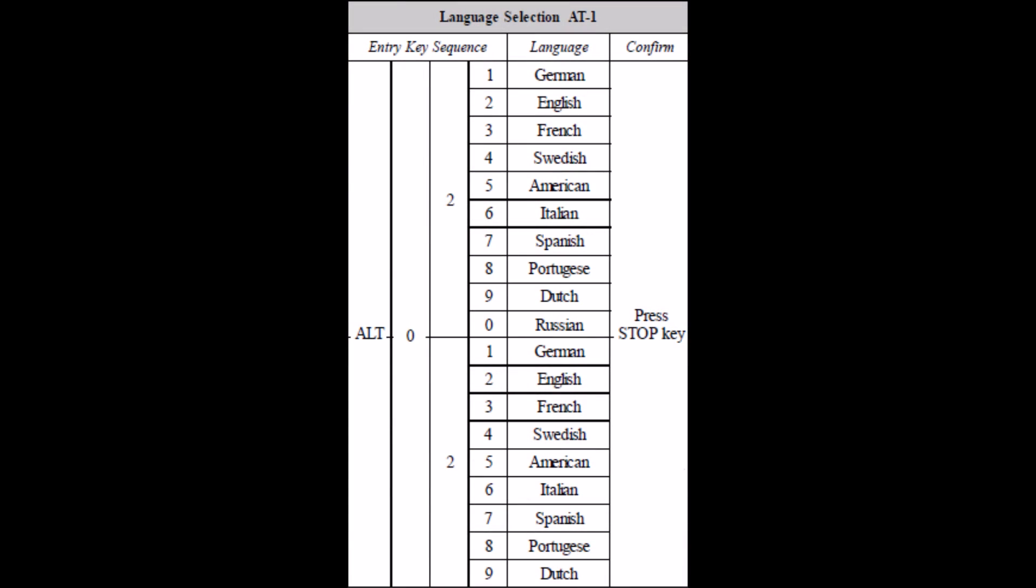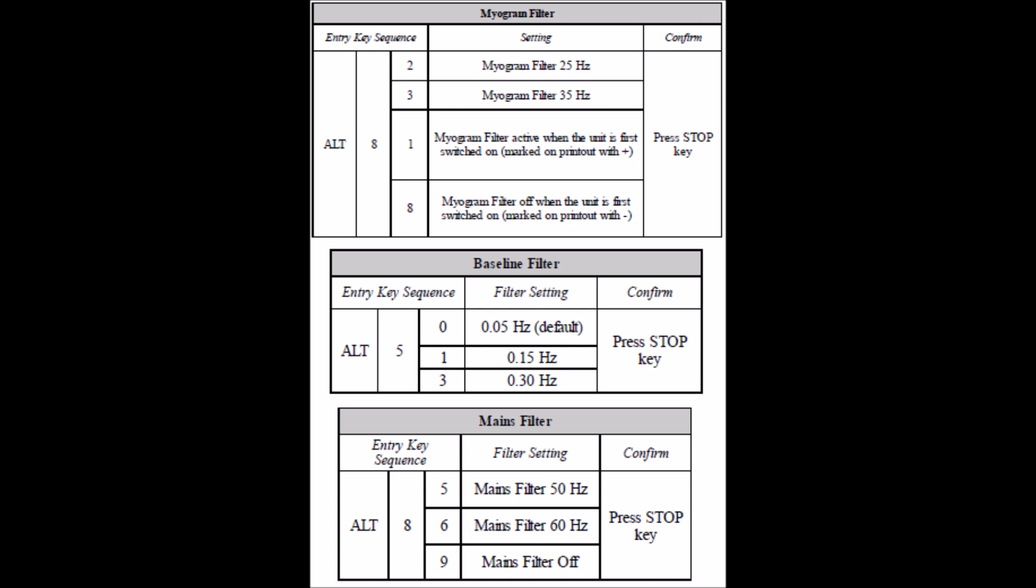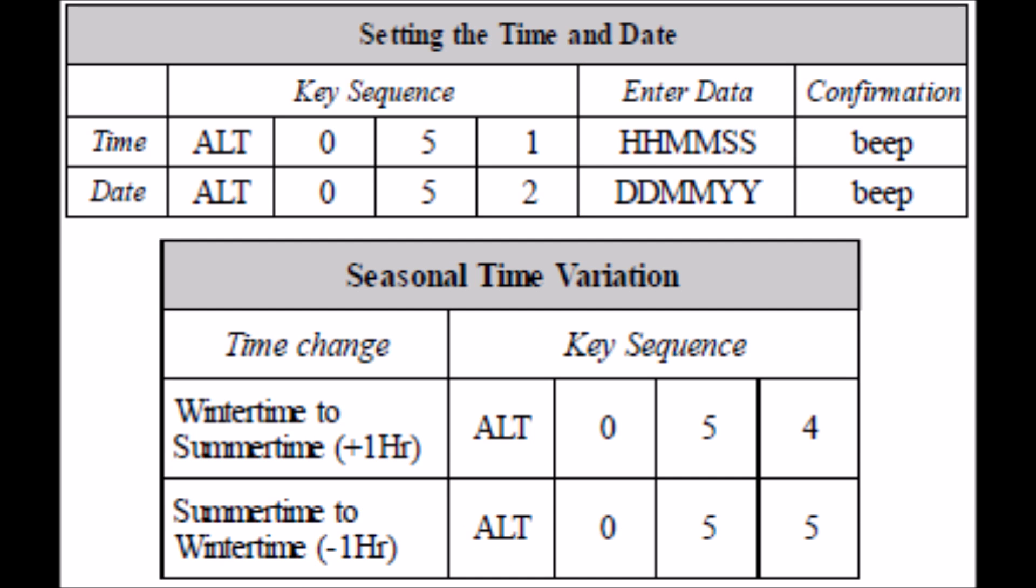To change the language setting, use the following codes. In order to change the frequencies of the migrant filter, borderline filter, and mains filter, use the following codes. If the time or date needs to be adjusted, here is the code sequence.